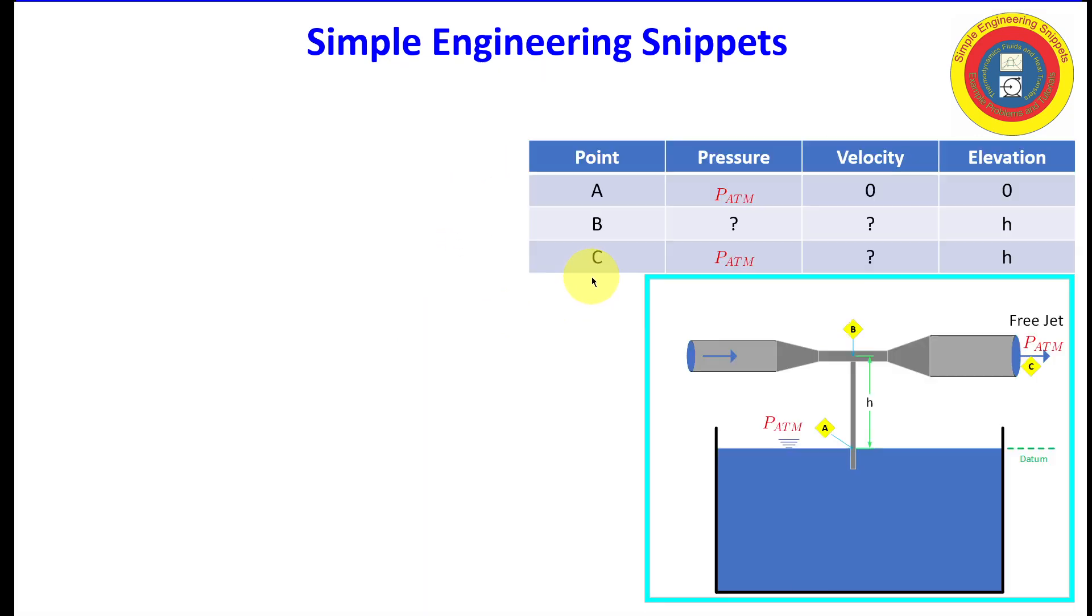All right, well, let's look at a summary table of what we do know. And so this tells us for the three points, alpha, Bravo, and Charlie, pressure, velocity, and elevation. So we've got quite a few unknowns here. And let's keep in mind what we're really looking for is the velocity at Bravo, which is just enough to suck water up into the suction tube, creating a static column of water in the suction tube.